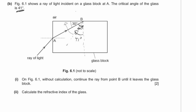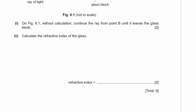Continuing the ray from B, we get total internal reflection, and as it leaves the glass block it changes direction. The angle on exit is 30 degrees. For the refractive index: n = 1 / sin(c) = 1 / sin(41°) ≈ 1.52. With two significant figures from the given data, the answer is 1.5 — no units, since it's a ratio.